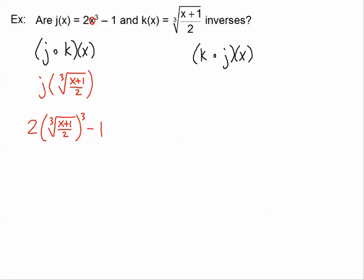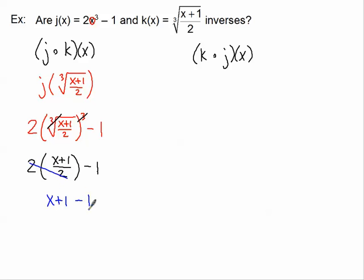Continuing with j(k(x)): cubing the cube root cancels them out, giving 2 times (x + 1)/2 minus 1. The 2s cancel, leaving x + 1 − 1, and the 1 and −1 cancel, giving x. So j(k(x)) = x, but this is only half of the proof — we still need to check k(j(x)).